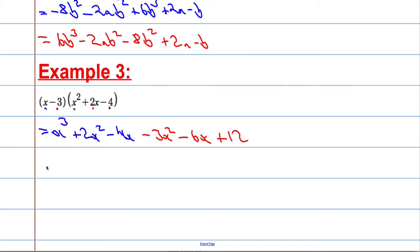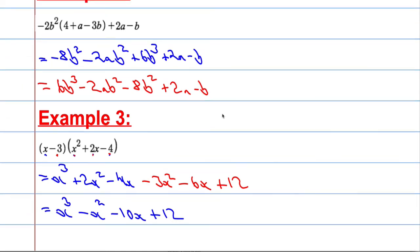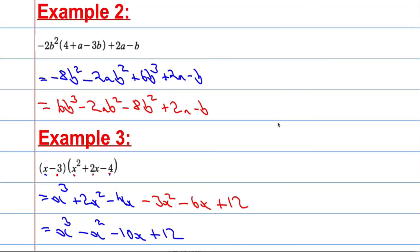Now let's collect our terms together. So x cubed. We've got 2x squared minus 3x squared is minus x squared. Minus 4x minus 6x is minus 10x. Plus 12. So this is actually a cubic expression. That's pretty much just a quick recap on expanding and simplifying with some more complicated examples.